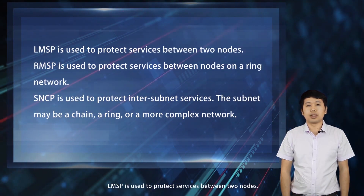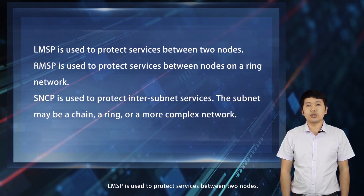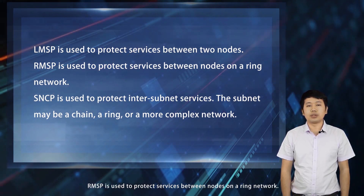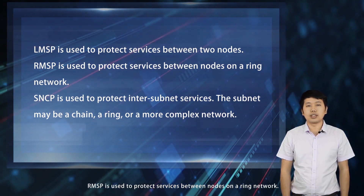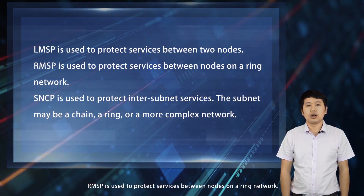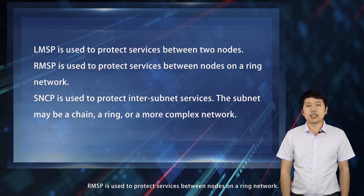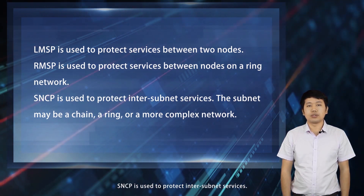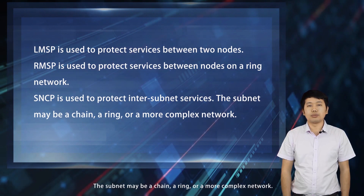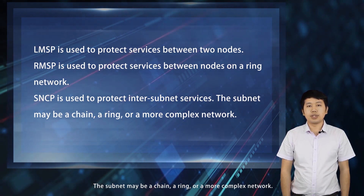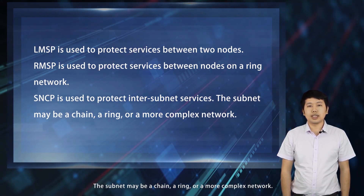LMSP is used to protect services between two nodes. RMSP is used to protect services between nodes on a ring network. SNCP is used to protect inter-subnet services. The subnet may be a chain, a ring, or a more complex network.